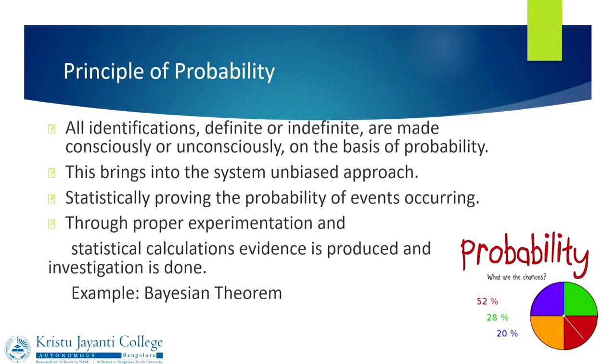The next principle is the principle of probability, which deals with chance — how much we can say that a particular evidence belongs to a particular person. If it is individualistic evidence, we can say close to 100 percent it belongs to that person. But if it is class evidence, for example in a road traffic accident where two cars collide and one car escapes, we will be able to find certain paint scrapings from the car that fled.